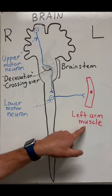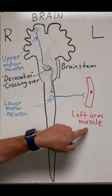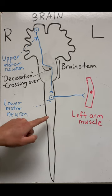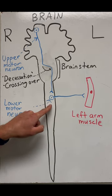Let's take an example where you want to move your left arm muscle. Well, in order for that muscle to contract, it needs to receive a signal from what's called the lower motor neuron, the cell that sends the signal to the muscle itself.